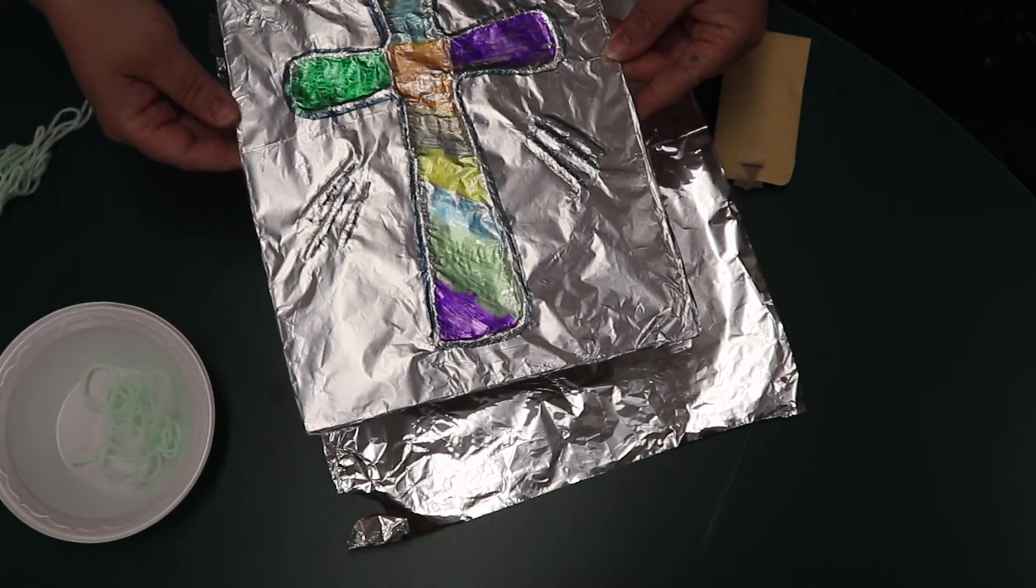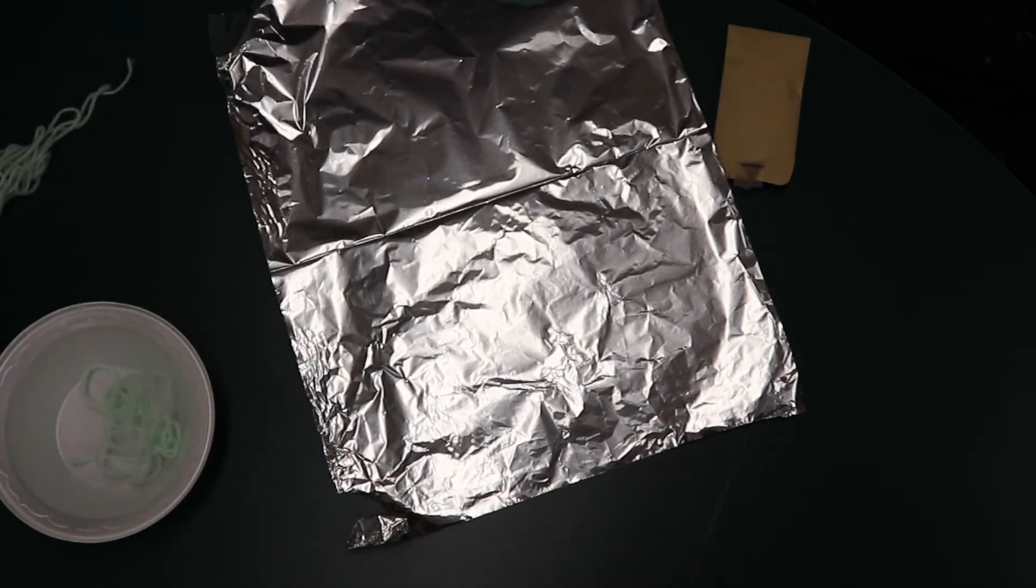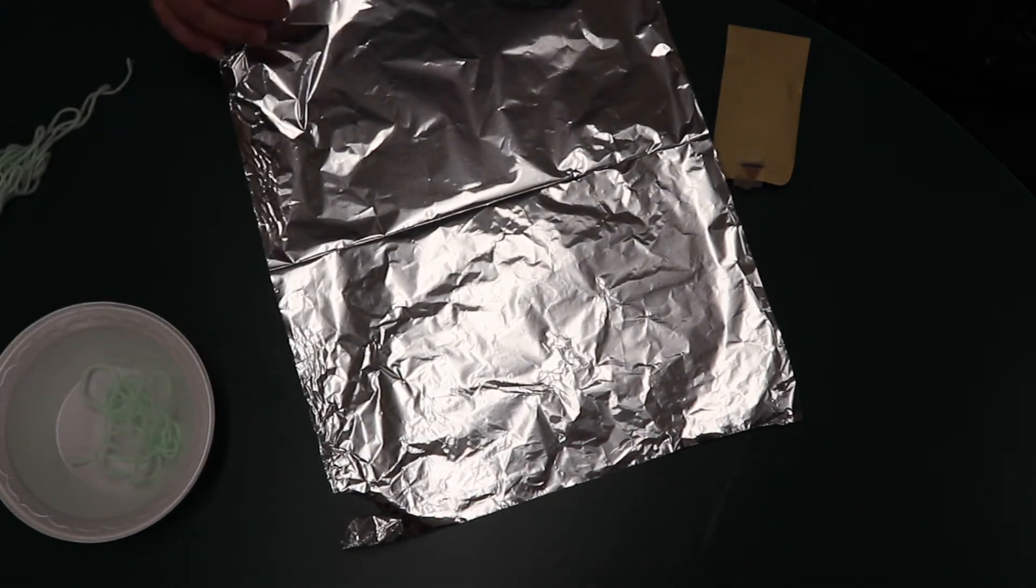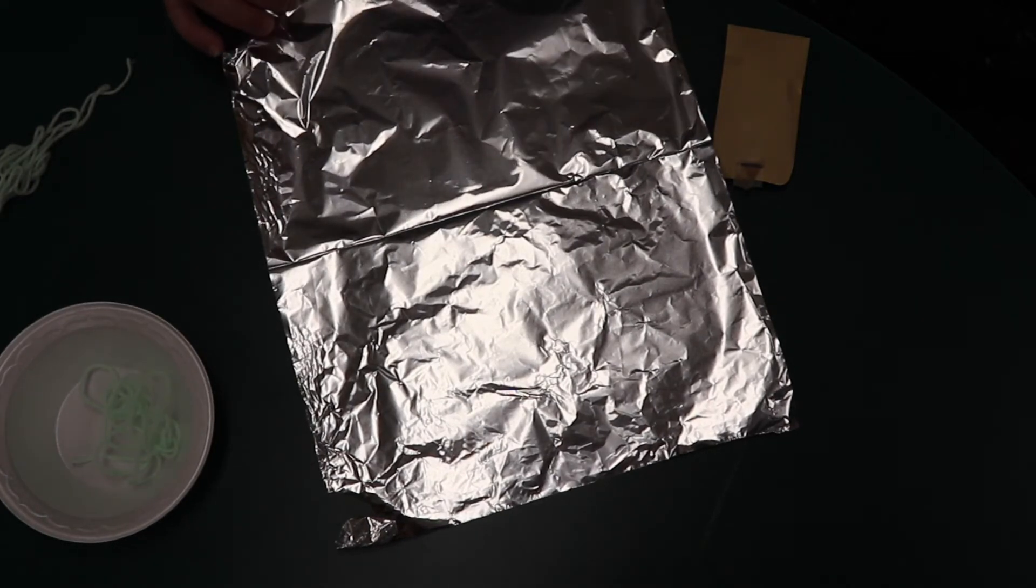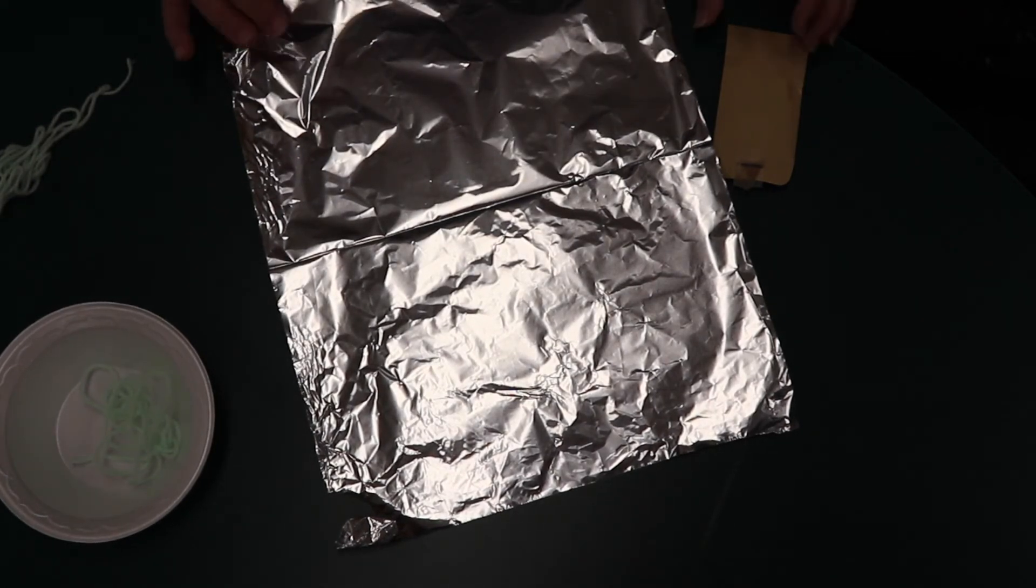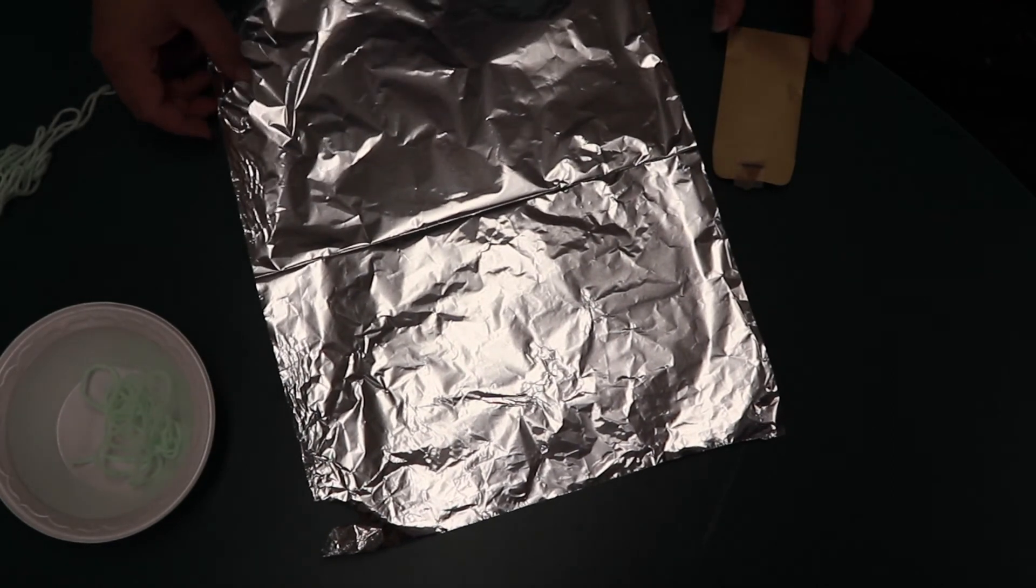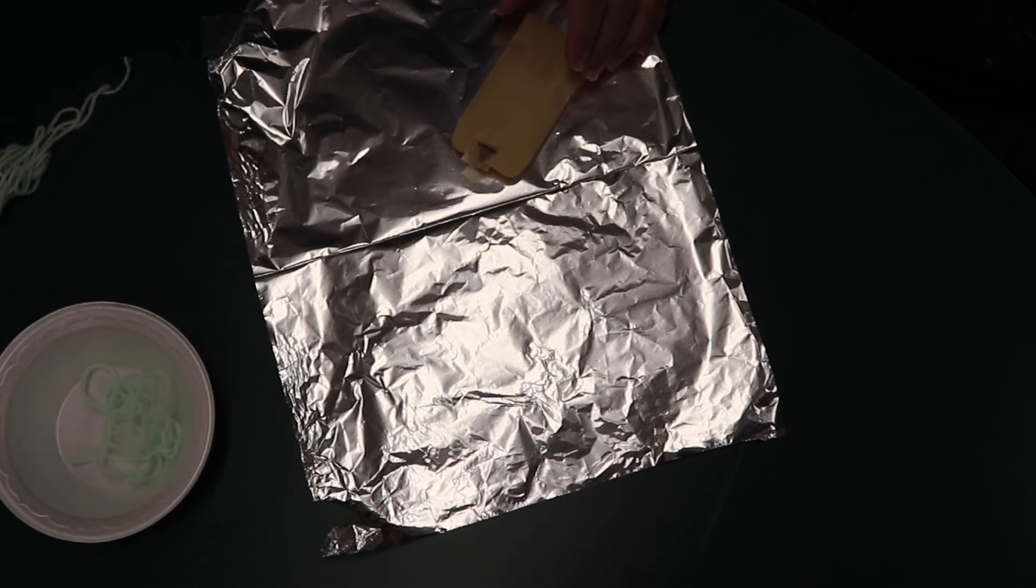Now I will say it is easier if you put your string on and let the glue dry a little bit. It won't slide around as much when you put your tin foil, so you might want to do that and let it sit for a little bit before you put your tin foil on.